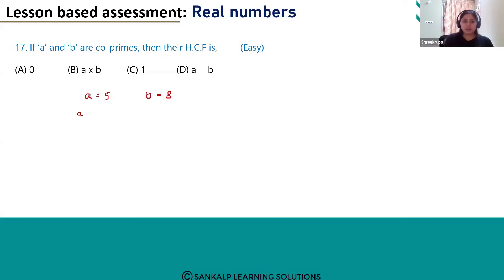So if we take the factors of 5 that is A we will get 1 and 5 only, and if you take the factors of B, I mean 8, then it will be 1, 2, 4, and 8.